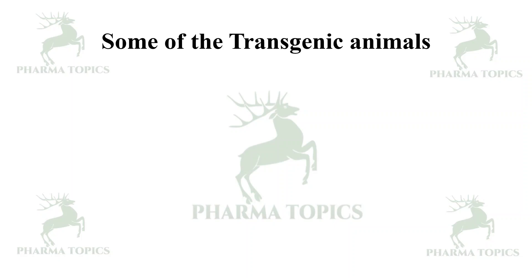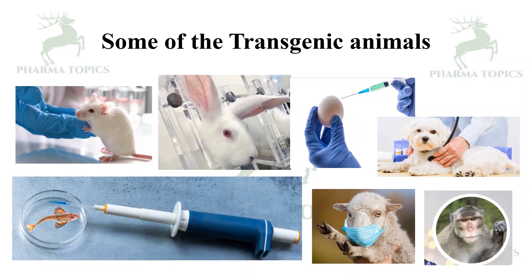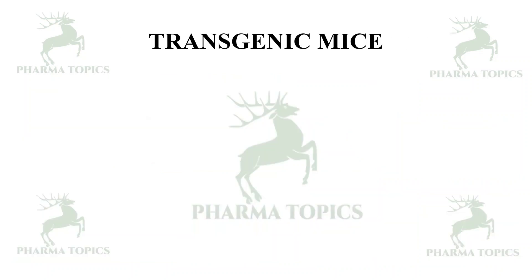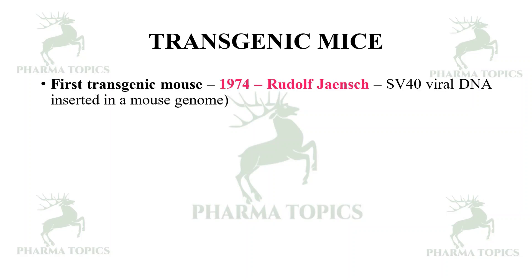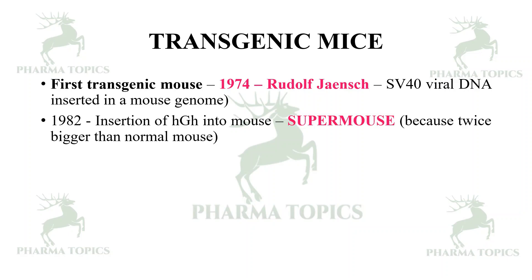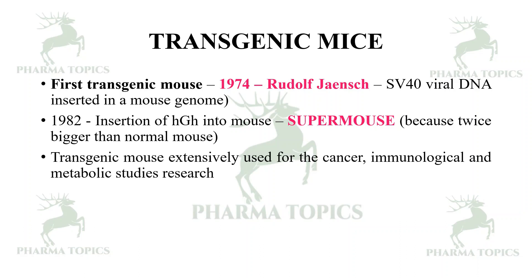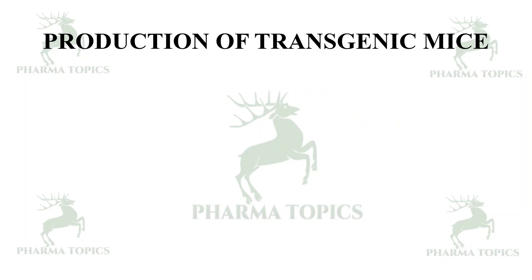Some examples of transgenic animals include transgenic mice, rabbits, chickens, fish, goats, monkeys, and dogs. The first transgenic mouse was produced in 1974 by Rudolph Jaenisch using SV40 viral DNA inserted into a mouse genome, though it did not express the recombinant DNA. In 1982, insertion of the human growth hormone gene into a mouse produced a 'super mouse' — twice the size of a normal mouse. Transgenic mice are extensively used for cancer, immunological, and metabolic studies.